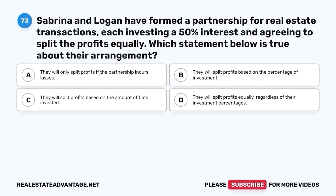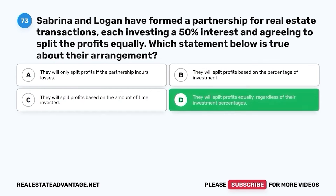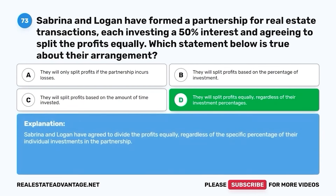Question 73. Sabrina and Logan have formed a partnership for real estate transactions, each investing a 50% interest and agreeing to split the profits equally. Which statement below is true about their arrangement? A. They will only split profits if the partnership incurs losses. B. They will split profits based on the percentage of investment. C. They will split profits based on the amount of time invested. D. They will split profits equally, regardless of their investment percentages. The correct answer is D. They will split profits equally, regardless of their investment percentages. Sabrina and Logan have agreed to divide the profits equally, regardless of the specific percentage of their individual investments in the partnership.